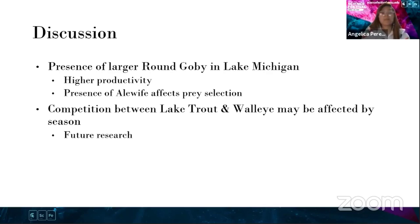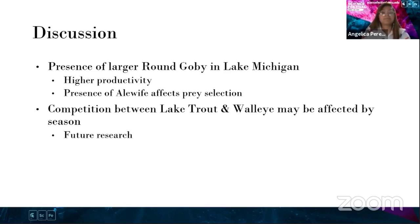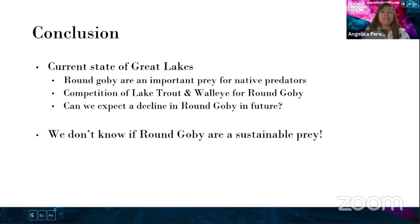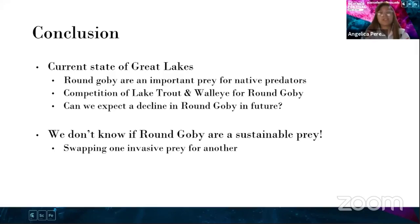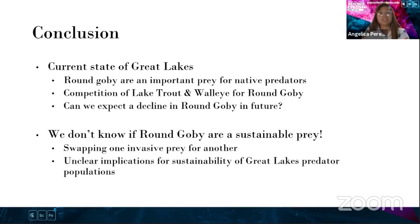A future avenue for research may be comparing whether there's competition between lake trout and walleye depending on season. Other authors have found that walleye specialize on prey items by season and by basin; however, this has not yet been conducted with a cross-comparison between Lake Michigan and Lake Huron. Currently in the Great Lakes, round goby are an important prey item for native predators, and competition between lake trout and walleye does exist for round goby. However, we don't know if round goby are a sustainable prey, leading to unclear implications for the sustainability of Great Lakes predator populations.